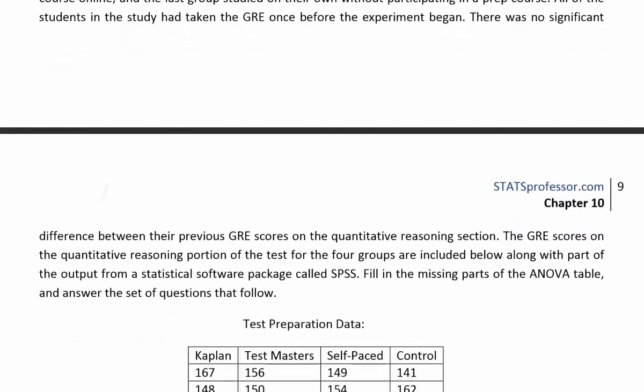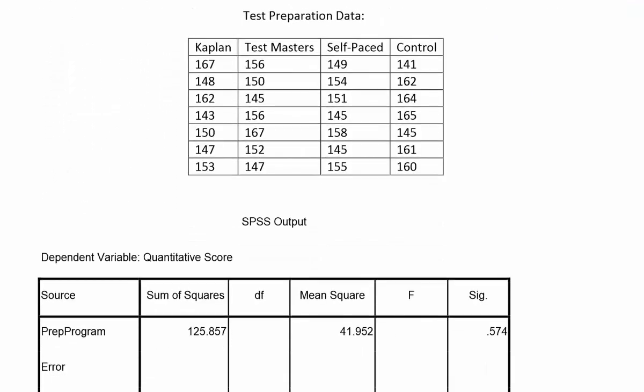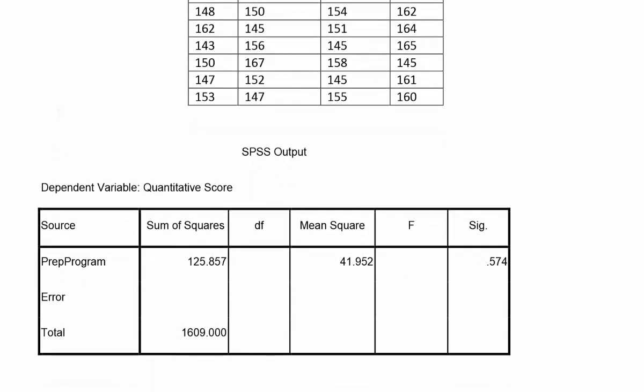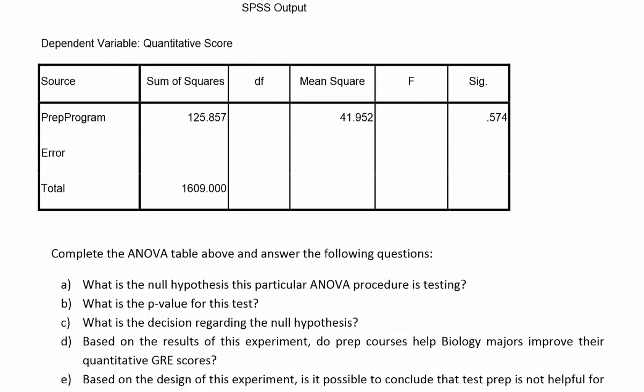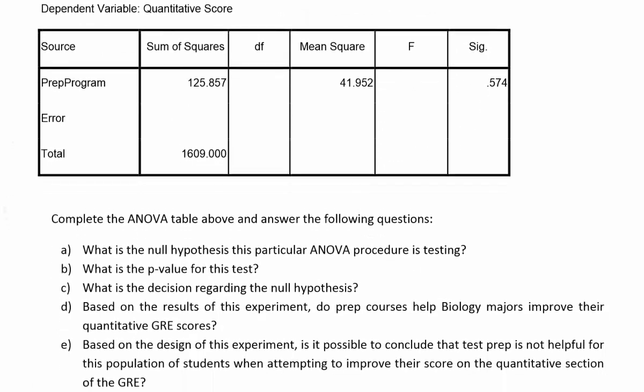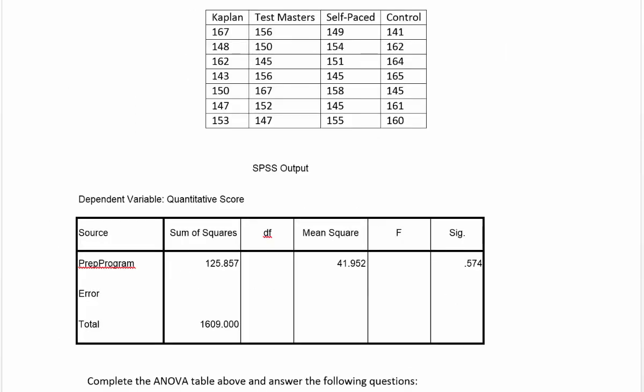Let's take a look at the data they've given us. They have the results for four groups: Kaplan, Test Masters, self-paced, and control. Then they have the SPSS output included. We're not going to look at the raw data so much. We want to pay attention mainly to the output because they've provided us all the work. We just need to interpret what's been given. This is essentially an ANOVA table that's not completed. We need to go through and figure out the missing parts first.